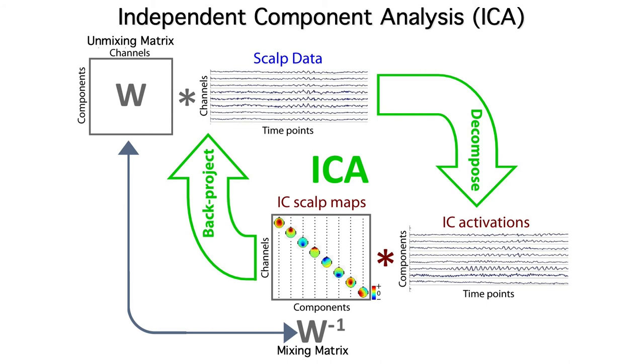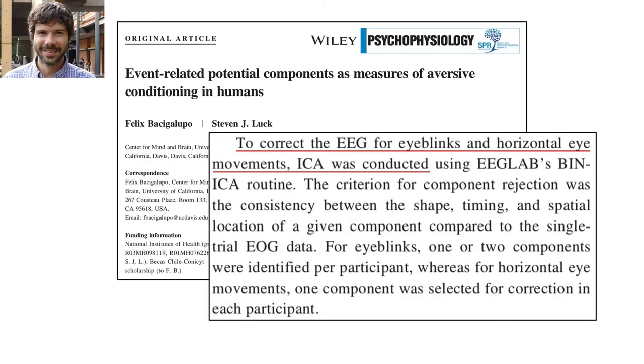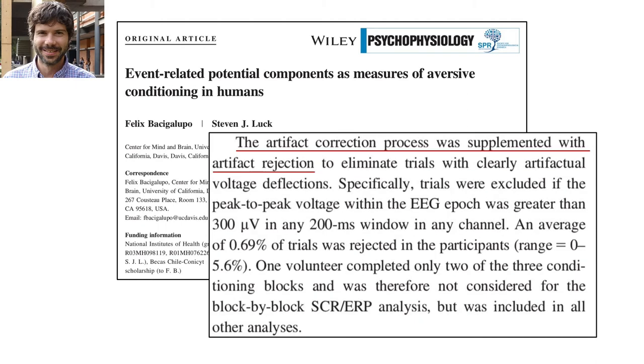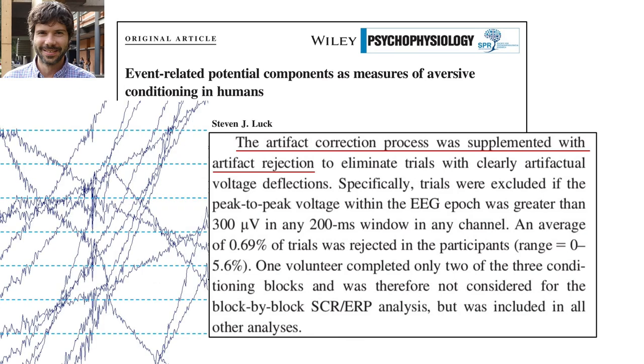Felix used ICA to correct for blinks and eye movements in his aversive conditioning study. He also used artifact rejection to get rid of any large miscellaneous artifacts like EMG bursts and movement artifacts, but only a small percentage of trials were rejected.